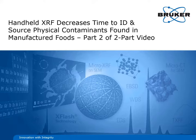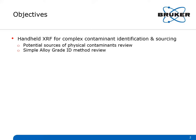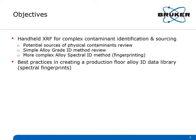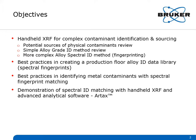These arise when there are multiple potential sources of the contaminant. Our objective is to provide you with information to ID and source contaminants. We will first review potential sources of physical contaminants and the simple alloy grade ID method, then explain how to use the spectral fingerprinting method, best practices in creating a production floor spectral fingerprint library, and demonstrate the use of RTAC spectral fingerprint matching software.